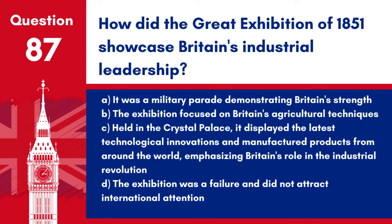Question 87: How did the Great Exhibition of 1851 showcase Britain's industrial leadership? a. It was a military parade demonstrating Britain's strength. b. The exhibition focused on Britain's agricultural techniques. c. Held in the Crystal Palace, it displayed the latest technological innovations and manufactured products from around the world, emphasising Britain's role in the Industrial Revolution. d. The exhibition was a failure and did not attract international attention. Answer: c. The Great Exhibition was a symbol of the Victorian age and Britain's industrial dominance.